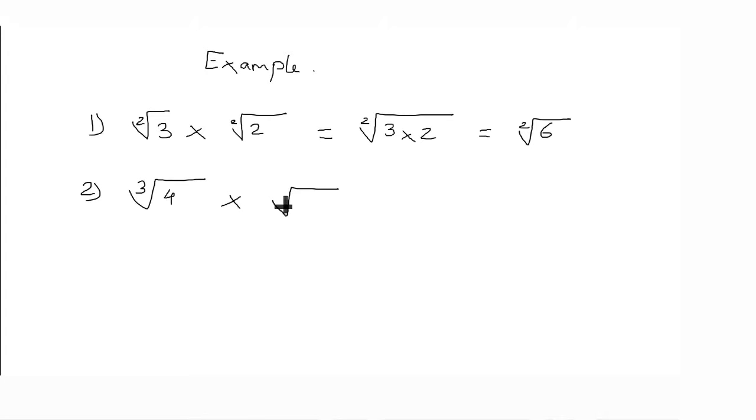Second example, cube root of 4 into square root of 5. Here both the orders are different. You have cube root and square root. So to do this, there is a rule. If n1 is not equal to n2, take LCM of n1 and n2.